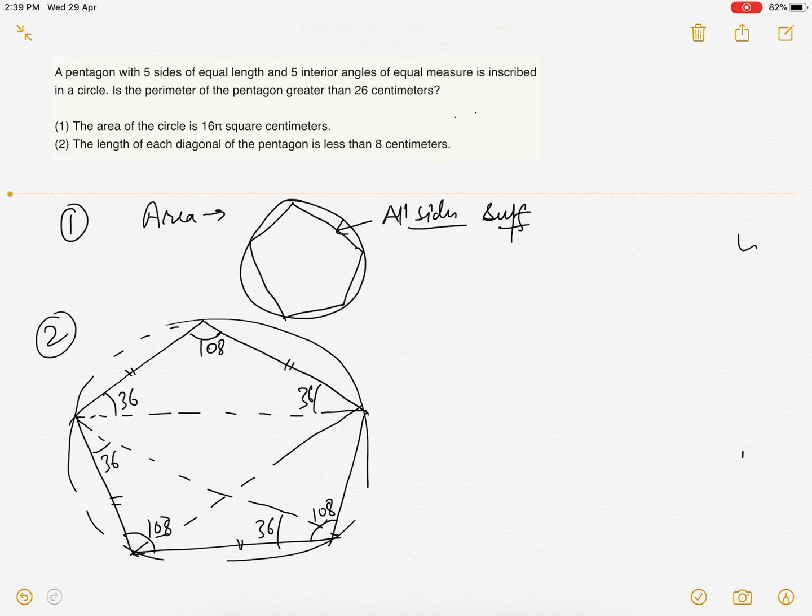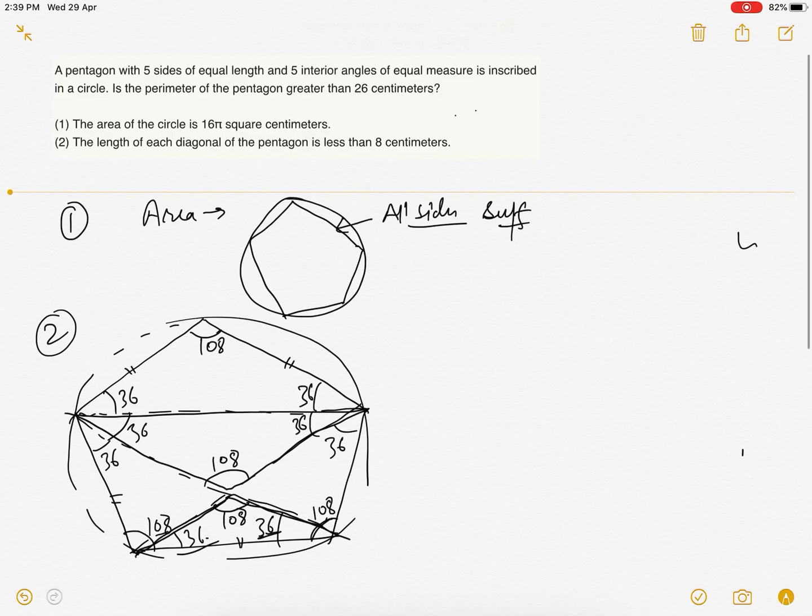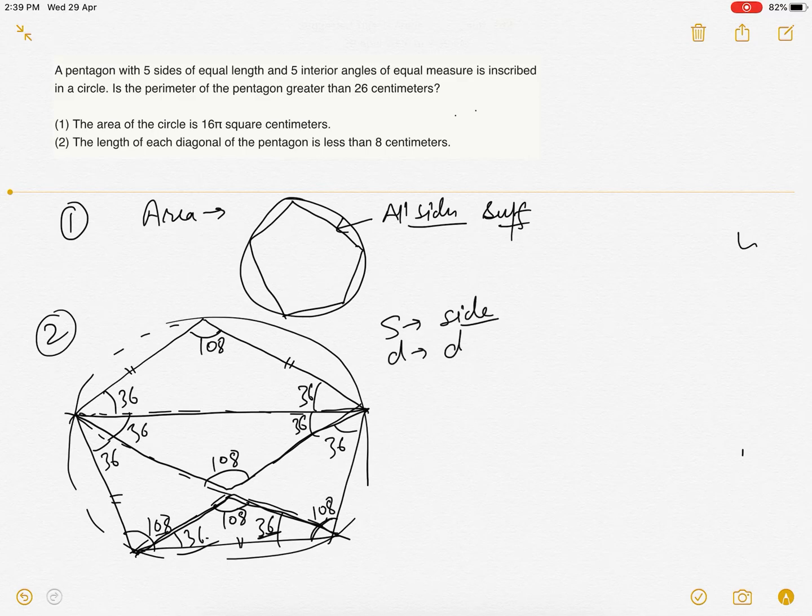This is 108, 36 and 36. This is also 108. If we see these two triangles, let's say s is the side length - all the sides are the same - and d is the diagonal length - all the diagonals are the same. So this would be d, s, s.